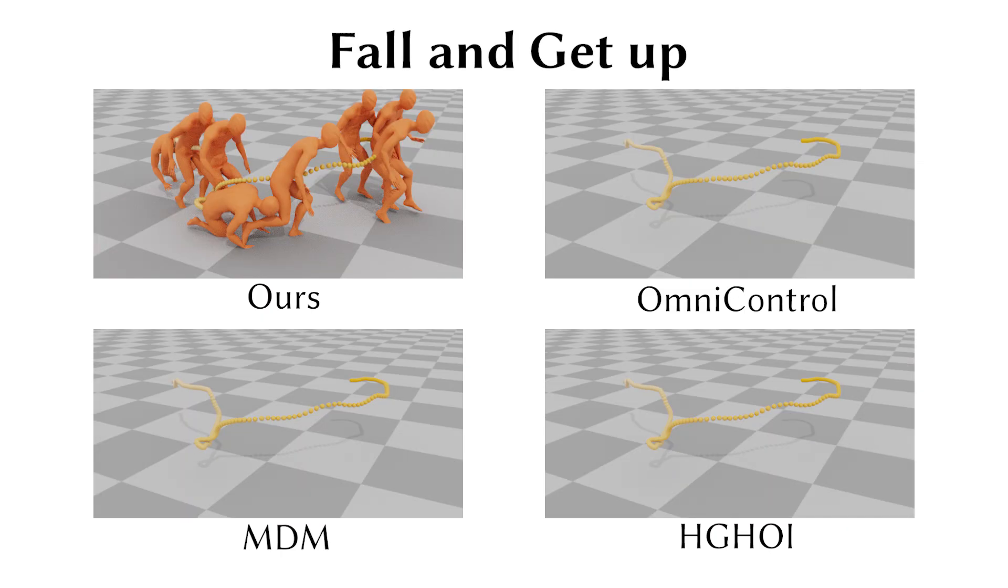Then we present an example of falling and getting up, where issues like floating and ground penetration are likely to arise. Our method produces the most plausible motion with minimal floating and penetration.